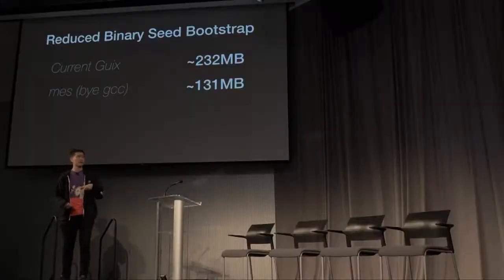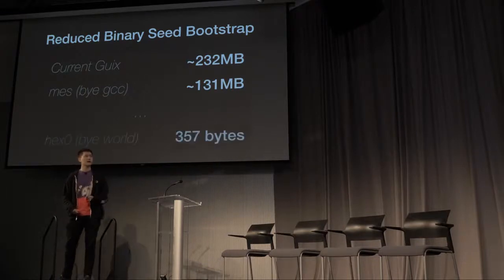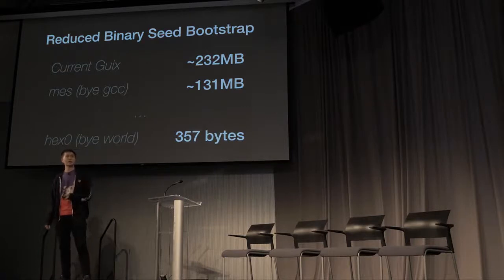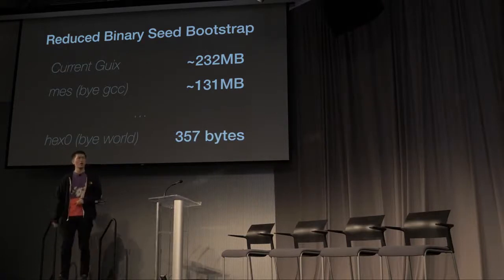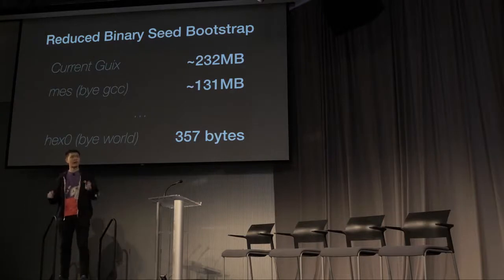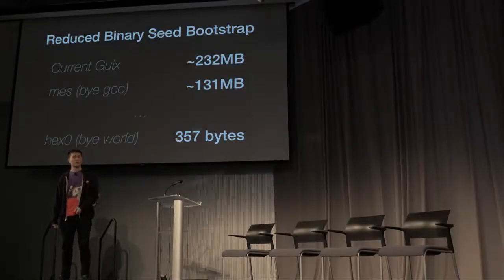On the core-updates branch right now, we have this bootstrap method called mess, which brings everything down to 131 megabytes. And at the end of the day, what we'll hopefully do is incorporate a project called stage zero or hex zero, which would actually bring it down to about 357 bytes depending on the architecture. All we'd have to do is look at these 357 bytes — easily auditable, fully commented x86 assembly code — and we'd be able to bootstrap the whole world. Thank you.